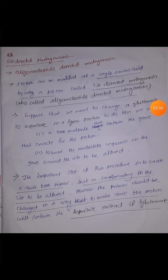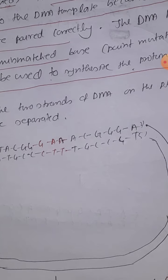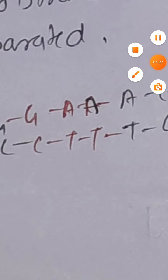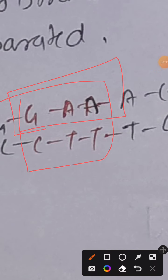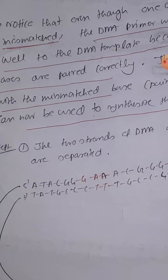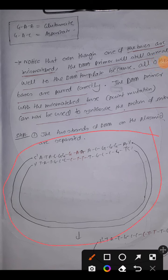The first step of the technique is to separate the two strands of the DNA that contain our gene of interest, which has the ability to encode the protein. In that gene, the triplet codon GAA is responsible for encoding glutamate. The entire gene gives us the entire protein. So our first job is to separate the two strands of the DNA.